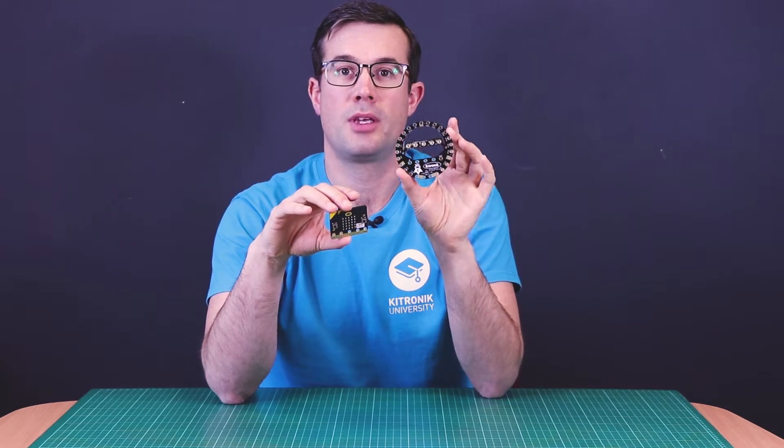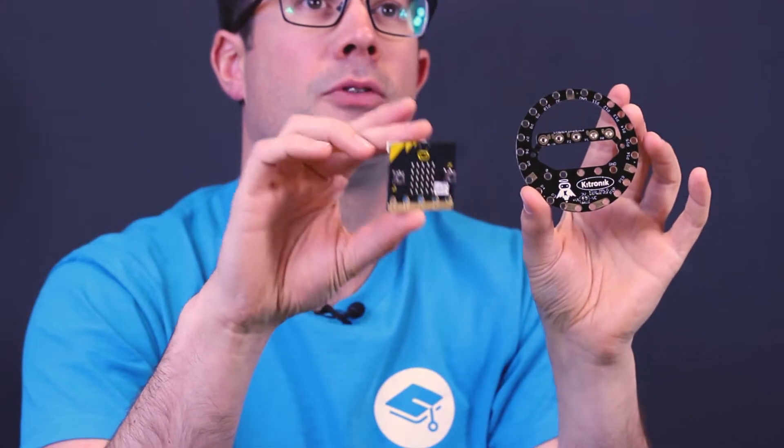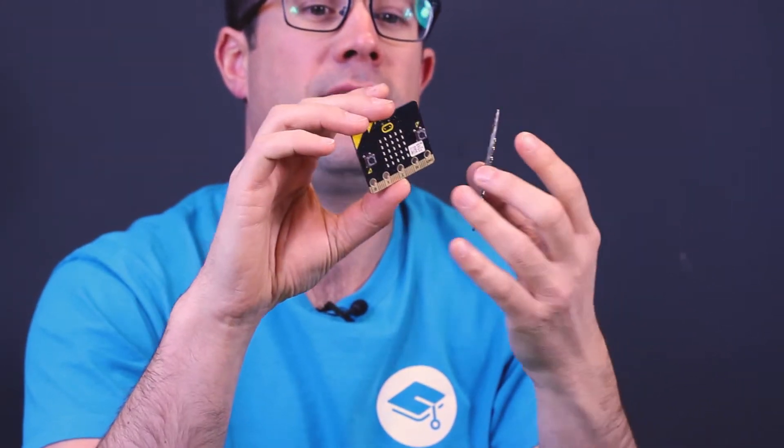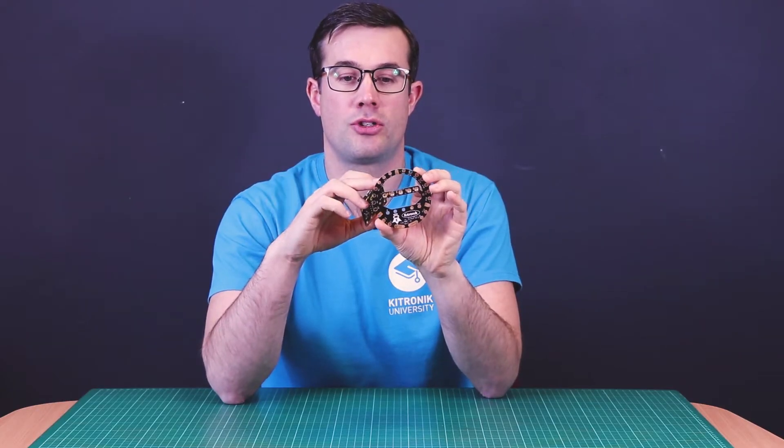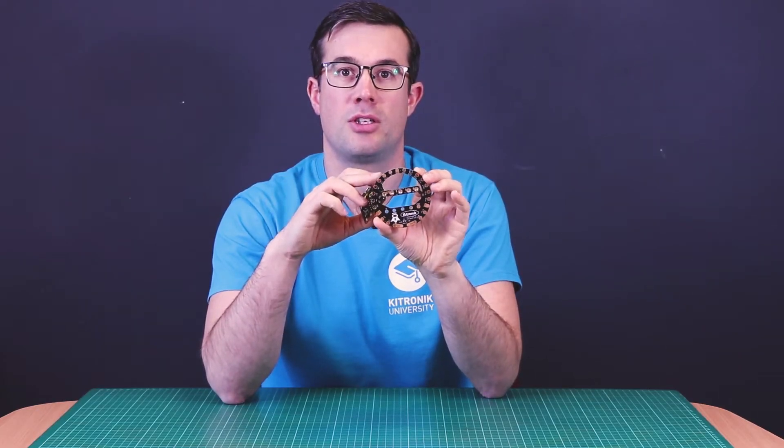This is the new Kittronic Clip Halo for the BBC micro:bit. We've designed this product so that you can easily connect to the micro:bit pins using these large circular connecting points.